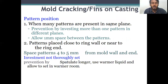The second cause of mould cracking is lack of thickness of the investment material due to wax pattern positioning, and also due to placement of the investment material before it is thoroughly set. When many patterns are present in the same plane, prevention is by investing more than one pattern in different planes, allowing at least one millimeter space between patterns. Patterns placed too close to the ring wall should be at least four to five mm from the mould wall and end. Investment not thoroughly set is prevented by longer spatulation, increasing the temperature of the liquid, and allowing it to set in a warmer environment.